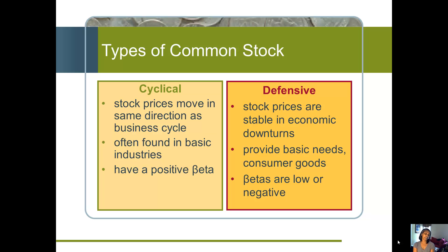A defensive stock is kind of the opposite — it's stable in downturns. These are ones where it just doesn't matter what's going on in the economy; people need these goods. This would be groceries, medicine, and those basic needs that consumers always buy no matter what's going on in the economy.